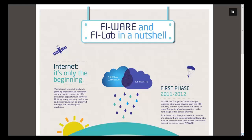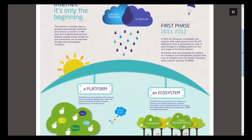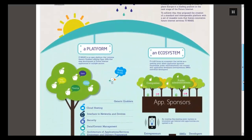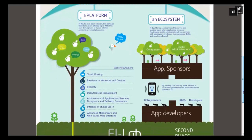FIWARE is a European project of the Future Internet Public-Private Partnership, whose main objective is to promote innovation in the ICT industry and create the standards of the new technologies coming — big data, cloud hosting, Internet of Things, interface networks, and security, among others. Software is present in every sector and it's vital to create new environments and ecosystems allowing different stakeholders to interact. And that's FIWARE's goal.